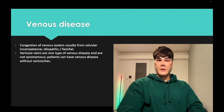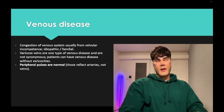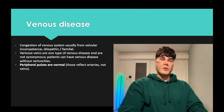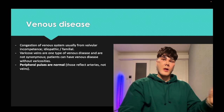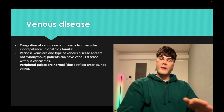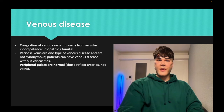Venous disease in contrast is valvular incompetence, usually idiopathic or familial. The patient need not have varicose veins — those are just one type of venous disease. You do an ultrasound and the patient can have venous backflow or venous incompetence seen on ultrasound with no varicose veins — that's still venous disease. Active DVT and superficial thrombophlebitis can be sequelae, but a patient can also just have venous incompetence with no DVT, no superficial thrombophlebitis, no varicose veins. Peripheral pulses are normal because it's the veins affected, not the arteries.